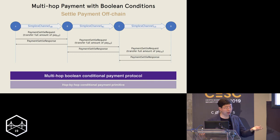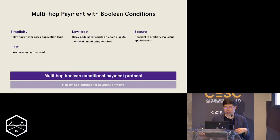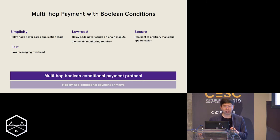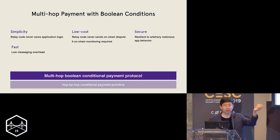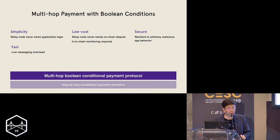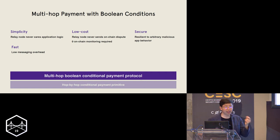The key property of this multi-hop payment design is that it is extremely simple: the relay node never actually cares about the application logic. You might wonder: what if the application itself is malicious, exhibiting Byzantine behavior where the outcome flips back and forth and never finalizes? We actually built the entire protocol so that the relay node is never affected by application logic and is robust to any kind of malicious behavior inside the network or inside the application.